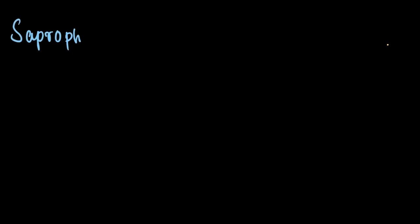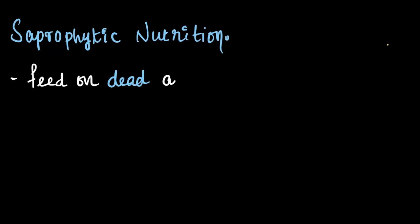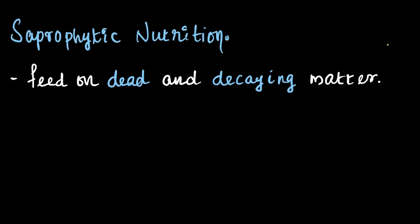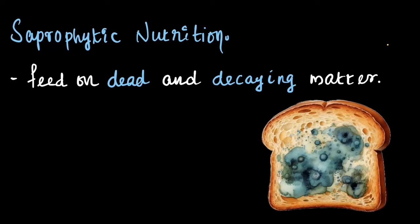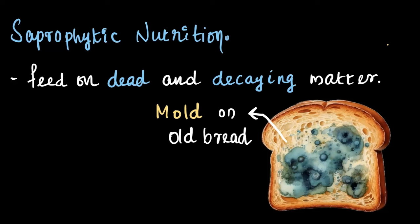Let's explore in this video. The first type of nutrition we are going to discuss is saprophytic nutrition. In saprophytic nutrition, organisms feed on dead and decaying matter. Fungi are classic examples of saprophytic nutrition in action. Have you ever seen a mold growing on bread? The gray stuff on the decaying bread is known as mold, and it gets its nutrition from the decaying bread. This is an example of saprophytic nutrition in action.